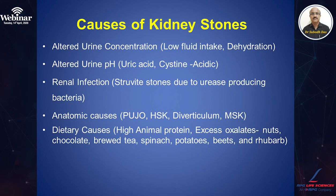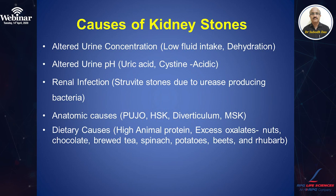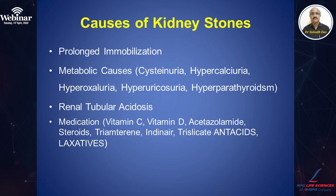In pelviureteric junction obstruction and horseshoe kidney, it is usually due to obstructive pathology. In diverticulum, it is because urine becomes stagnant, and medullary sponge kidney stones are metabolic in nature. Various dietary causes include high animal protein and excess intake of oxalates in the form of nuts, chocolates, brewed tea, spinach, potatoes, wheat, and rhubarb. Prolonged immobilization and metabolic causes like cystinuria, hypercalciuria, hyperoxaluria, hyperuricosuria, and hyperparathyroidism can all give rise to renal stone disease.